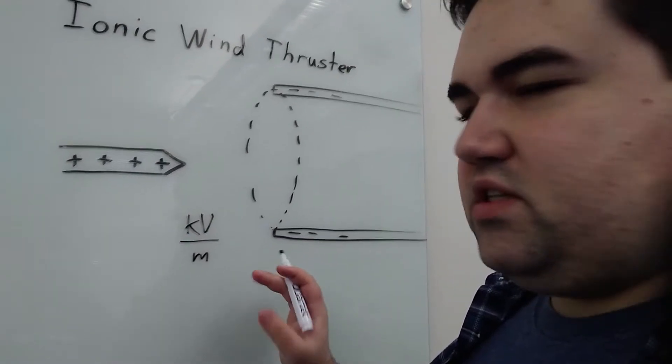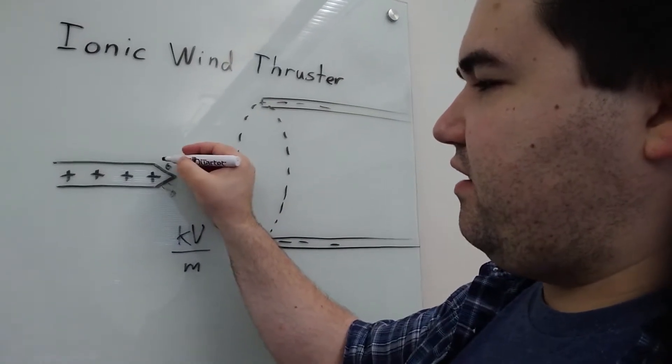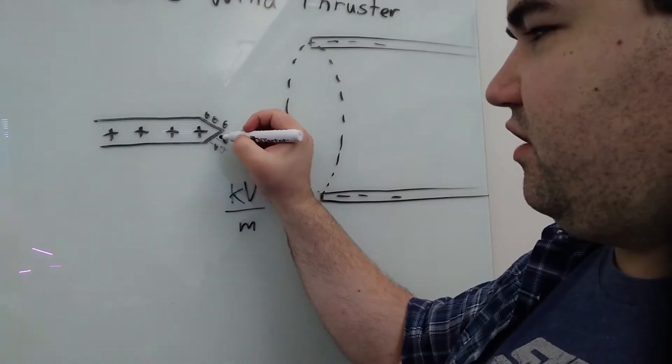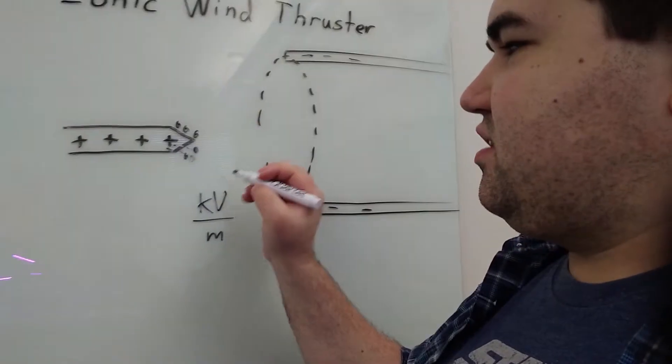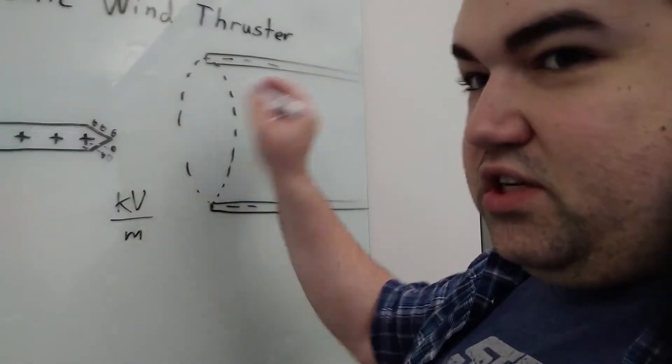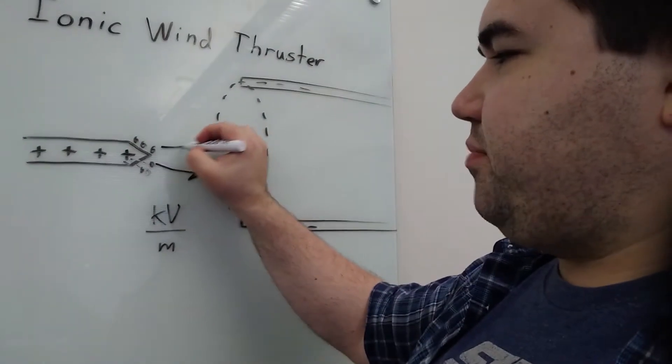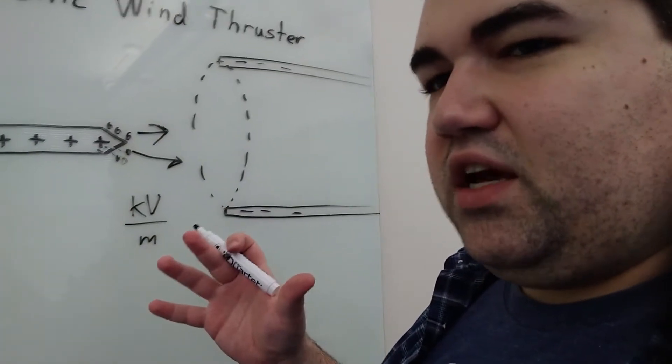And essentially what this does is right here the electric field is so strong it takes the air molecules that are nearby and it essentially rips electrons off of them. And the electrons go into the nail and then you have all of these ions. And these ions feel this really strong electric field. So they're accelerated towards the negatively charged pipe. But in that process they run into other neutrals and they re-neutralize themselves.